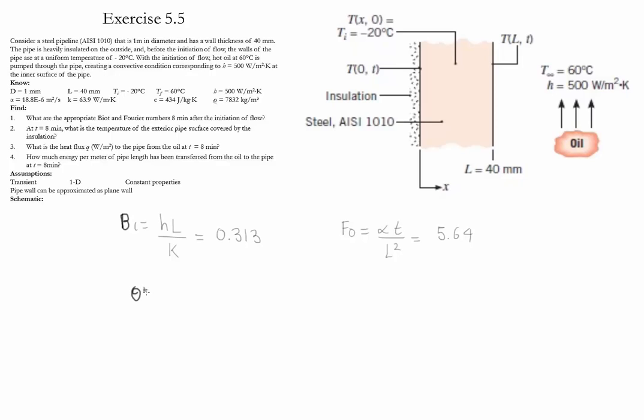The first step is to find theta star zero. This is equal to C1 times exp minus psi 1 squared times the Fourier number. Using table 5.1, we find that C1 equals 1.047 and psi 1 equals 0.531. Therefore, we find that theta zero star equals 0.214.